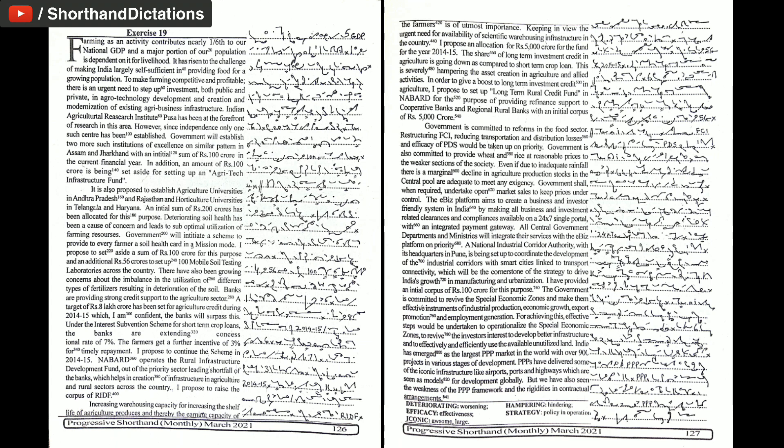Government is committed to reforms in the food sector. Restructuring FCI, reducing transportation and distribution losses and efficacy of PDS would be taken up on priority. Government is also committed to provide wheat and rice at reasonable prices to the weaker sections of the society. Even if due to inadequate rainfall, there is a marginal decline in agriculture production.